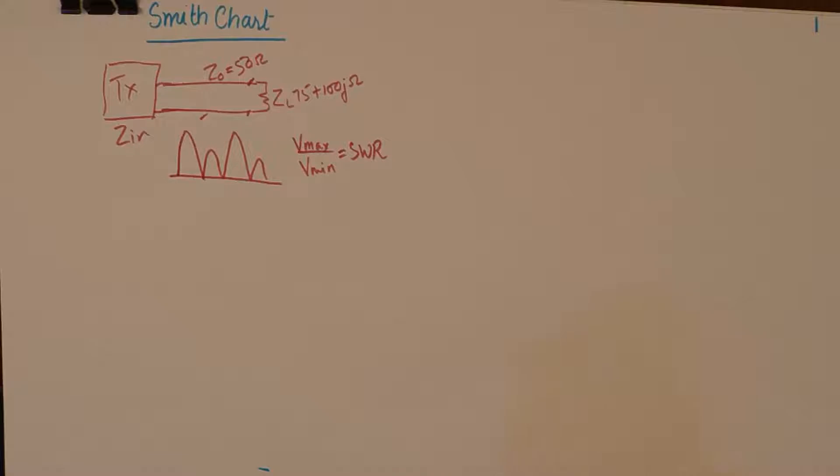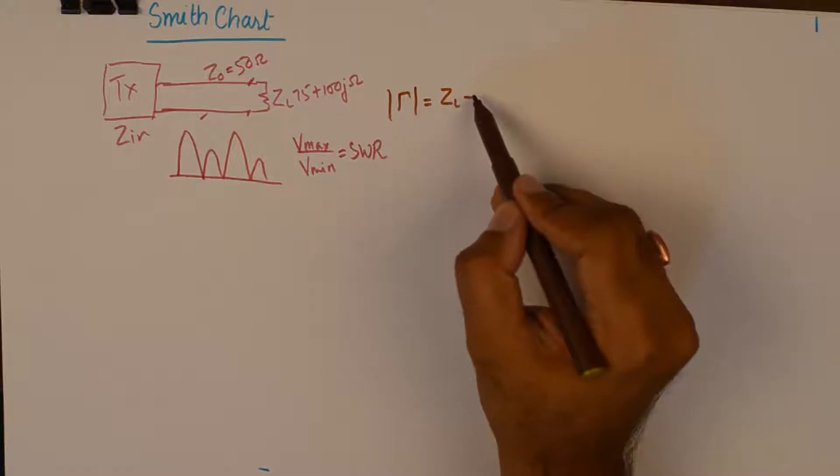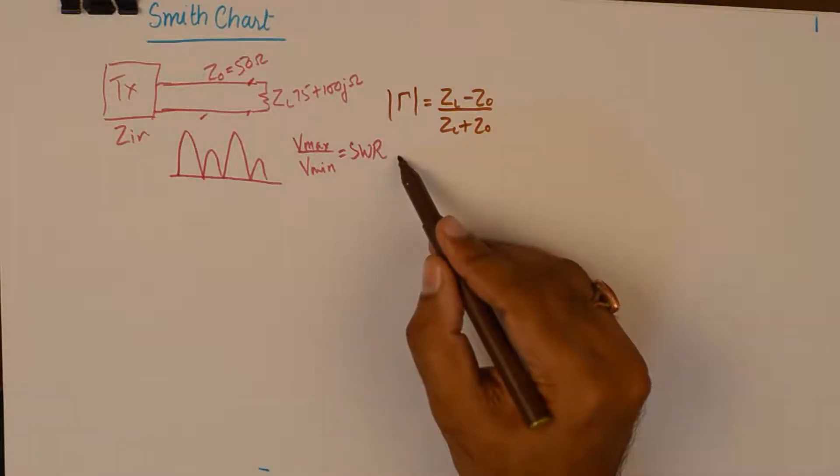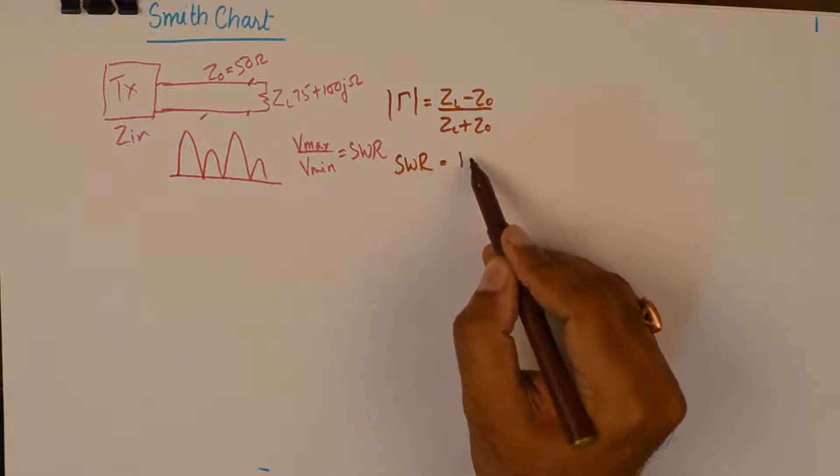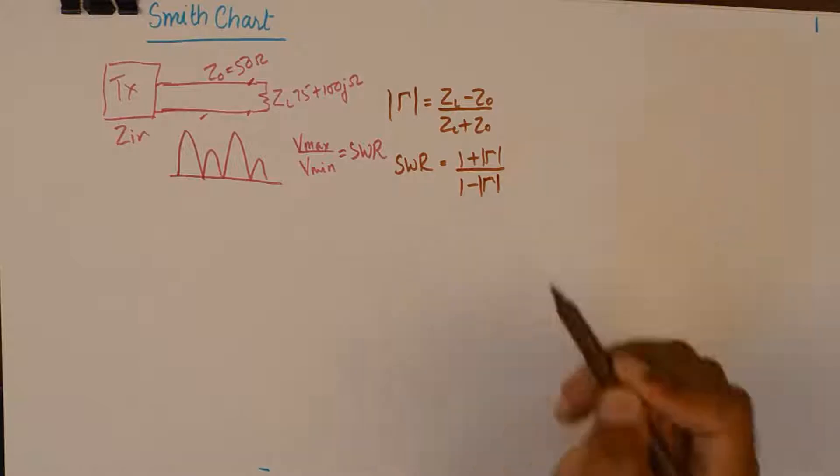And moreover, if you have watched my previous videos where I have discussed the reflection coefficient, it is given by ZL minus Z0 over ZL plus Z0. In order to make this thing minimum, we need the values of ZL and Z0 to be equal, which can never happen. And the standing wave ratio is dependent upon reflection coefficient and mathematically it is expressed like this.